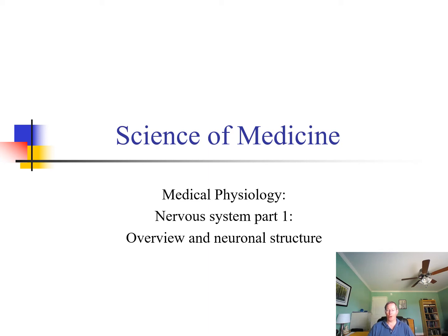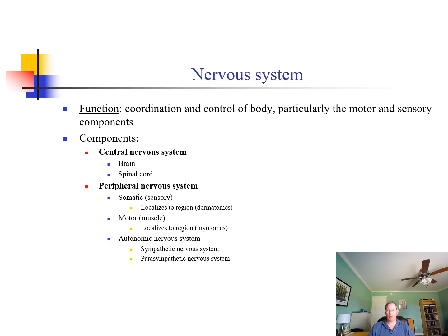Today I want to talk about the nervous system, and I'm going to do this in many parts because there are a lot of complexities associated with this. I want to make sure that you have a functional overview of how your nervous system works. To begin with, the nervous system is a control system, and its purpose is a hardwired type of control of many of the functions that you exhibit.